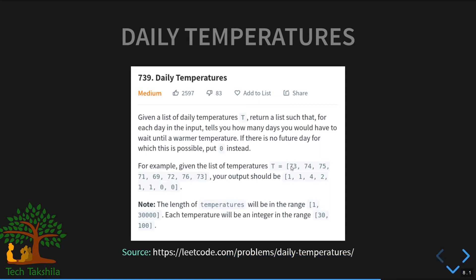Working through the example with temperatures [73,74,75,71,69,72,76,73]: 74 is warmer than 73 in one day; 75 is warmer than 74 in one day; 76 is warmer than 75, four places ahead; 72 is warmer than 71 two days later, and one day after 69; 76 is one day after 72; but nothing is warmer than 76 or the final 73, so they get zeros. Pause and think how you'd solve this with stacks.